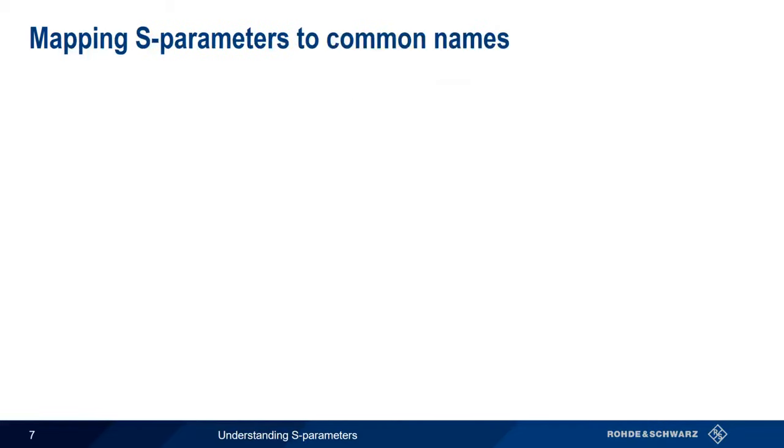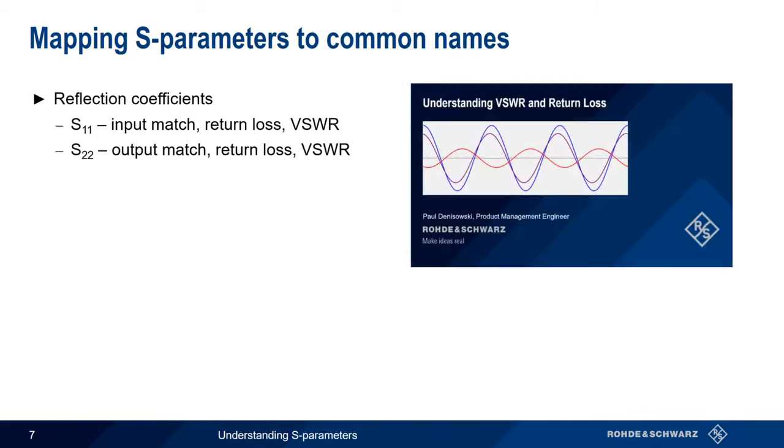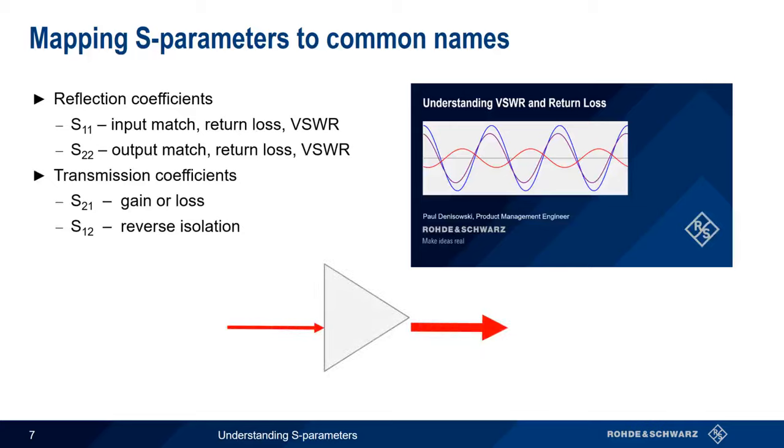Although S-parameters are almost universally known among RF engineers, there are also more common or conversational terms for some S-parameters. The reflection coefficients, S11 and S22, describe the impedance match for input and output. This is usually quantified in terms of return loss or voltage standing wave ratio. Please see the presentation Understanding VSWR and Return Loss if you'd like to learn more about these measurements. For transmission coefficients, S21 corresponds to the amount of gain, or loss, between the input and output ports. S12 is a measure of reverse isolation, or how much power is flowing the wrong way through a device. For example, an amplifier should have gain in the forward direction, that is a positive value for S21, but ideally zero power flowing back from the amplifier output to the amplifier input.